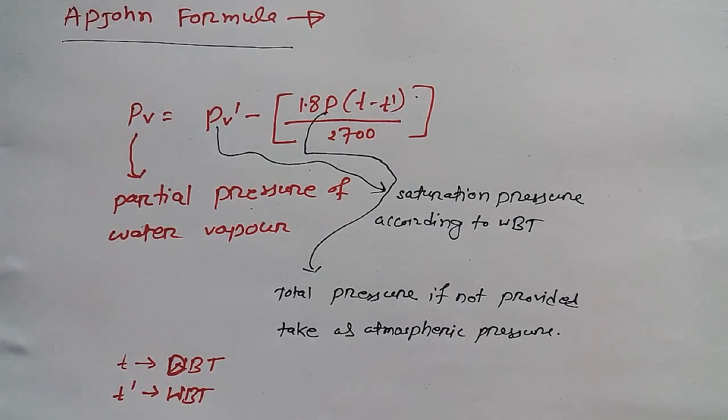Here, pv is partial pressure of water vapor. pv dash is saturation pressure according to WBT - WBT means wet bulb temperature. 1.8p means total pressure. Now remember, if you don't have total pressure given in the question, then you have to take it as atmospheric pressure.